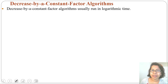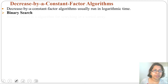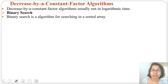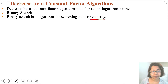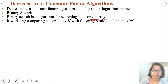Decrease by a constant factor algorithms usually run in logarithmic time. Let's discuss binary search. Binary search is an algorithm for searching in a sorted array. It works by comparing a search key k with the array's middle element.